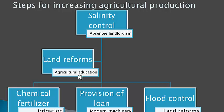If we have mechanization in the agriculture sector, it will improve productivity. Regarding chemical fertilizers, the government should reduce the rates of chemicals and fertilizers and provide artificial fertilizers to farmers at cheaper prices, so that if they apply more fertilizer to their crops, production will improve.